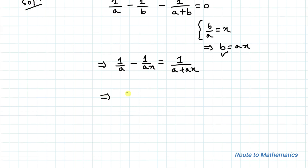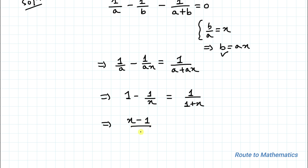Taking 1/a common from both sides of the equation, we have 1 - 1/x = 1/(1 + x). Now taking the LCM on the left side, we get (x - 1)/x = 1/(1 + x).